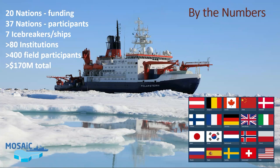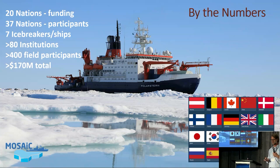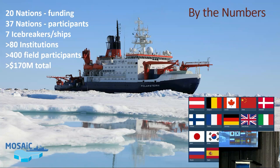Summarizing by the numbers: MOSAiC had 20 nations involved in funding and 37 nations involved in terms of people out there. We had seven icebreakers and ships, more than 80 institutions involved, and more than 400 people made it out to the ship while it was in the ice. The budgets are hard to quantify — big numbers, growing as we continue to invest in the science. A pretty significant international investment.